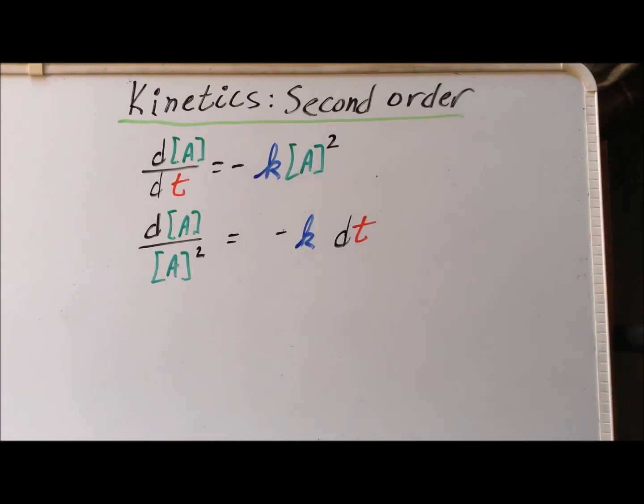This is a separable differential equation. So we are going to apply the method of separation of variables. We multiply each side by dt and divide each side by [A]² so that we get all the expressions involving the concentration of A on the left-hand side and involving time on the right-hand side.